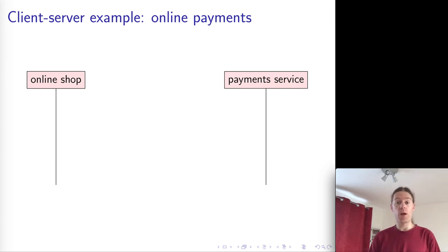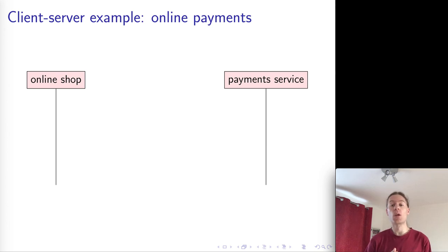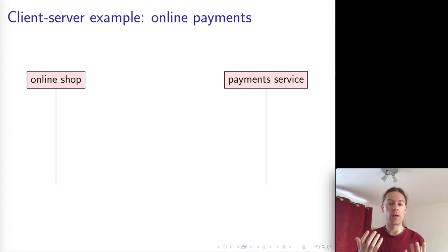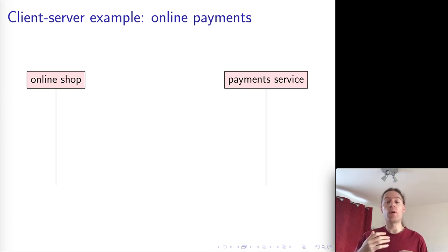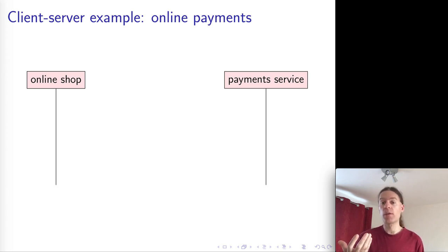We saw the web as one example of a distributed system consisting of a client and a server. Let's look at another practical example: imagine you're using some online shop to buy something. You enter your credit card number, choose what you want to buy, check out, pay with your credit card, and then you get the goods shipped to you.